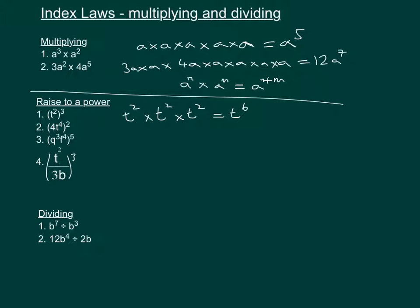On the next one we've got 4t to the power of 4, and that is squared, so we multiply it by 4t to the power of 4. We do 4 times 4 which is 16, and then t to the power of 4 times t to the power of 4 gives us t to the power of 8.